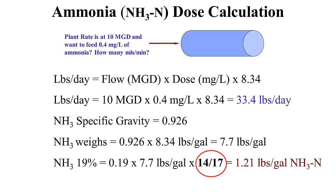We start with pounds per day equal to flow in MGD times mg/L times 8.34. In this example, we want to determine the correct feed rate of ammonia for a dose of 0.4 mg/L at a plant operating at 10 MGD. Multiplying 10 × 0.4 × 8.34, we get a feed rate of 33.4 pounds per day. Ammonia has a specific gravity of 0.926, so it is lighter than water and weighs about 7.7 pounds per gallon. The ammonia is 19%, and we add the 14/17 factor to determine that we have 1.21 pounds per gallon of active ingredient.